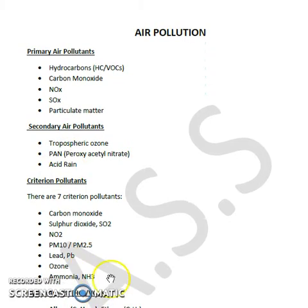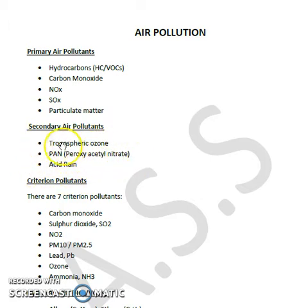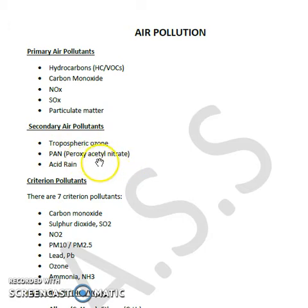In the category of secondary air pollutants, we have substances like tropospheric ozone, which is also called bad ozone. Then we have PAN — peroxyacetyl nitrate — which is an eye irritant or lacrimatory compound that causes irritation to eyes. Then we have acetylene, which is also a secondary pollutant.